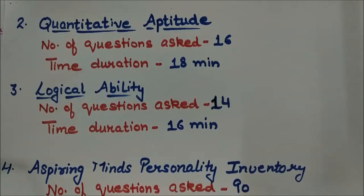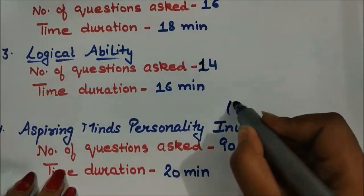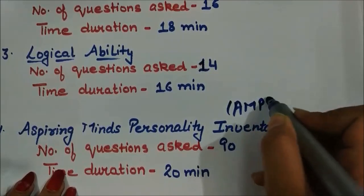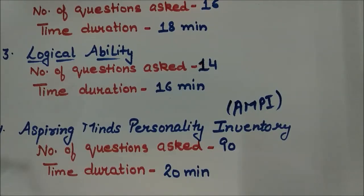The third compulsory module is Logical Ability, where the number of questions will be 14 and the time duration is 16 minutes. After this, the next compulsory module is Aspiring Minds Personality Inventory, also known as AMPI. In this module there will be 90 questions and the time duration will be 20 minutes.